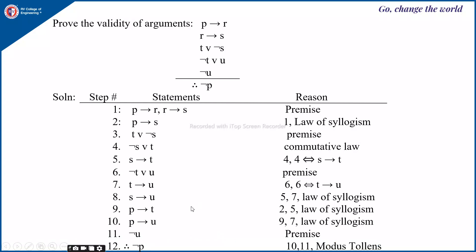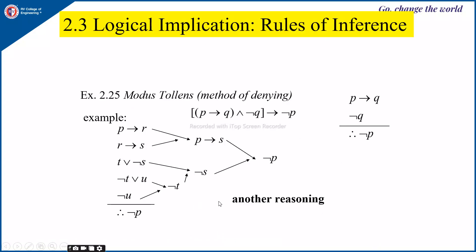This is how we prove the validity of the given argument. Modus tollens is also called the method of denying. It tells us that if P implies Q is true and not of Q is true, therefore not of P follows. Since not of Q is true, Q has to be false. And since P implies Q as a whole is true, P must also be false.